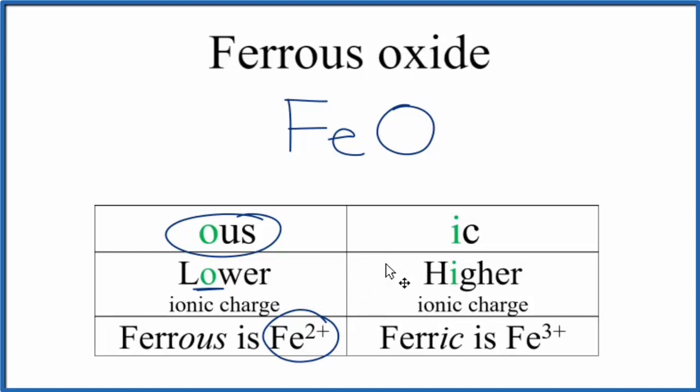You really have to realize that when we talk about iron, it's either 2+ or 3+, and the 'ous' tells you it's the lower one, the 2+. This is Dr. B with the formula for ferrous oxide. Thanks for watching.